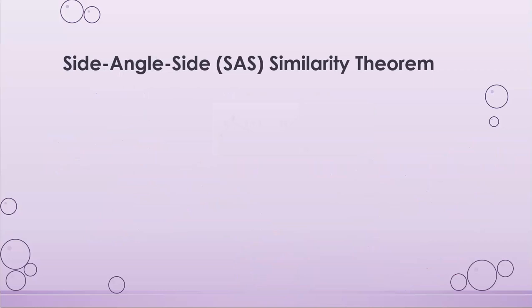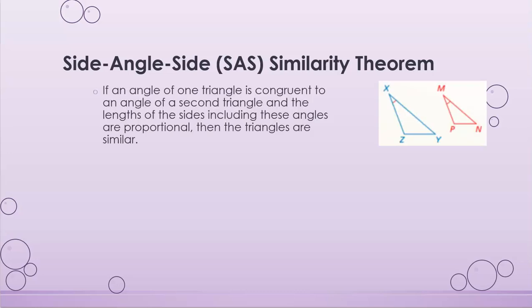The last theorem we'll learn about is Side-Angle-Side similarity. This is where two sides are proportional and the included angle between them is congruent. If angle X is congruent to angle M, and ZX over PM equals XY over MN, then the two triangles are similar.